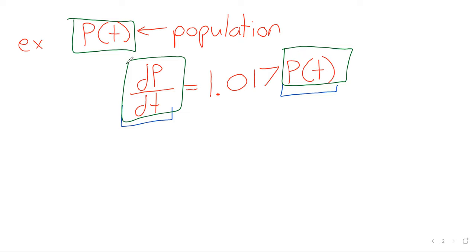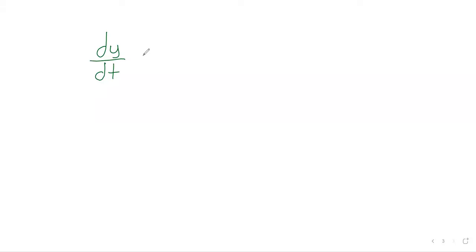Differential equations that look like dy/dt equals k times y are fairly common. So I called it kind of elementary, but that's not the same as being unimportant. You see equations like this any time the rate of change is a constant times the specific value.